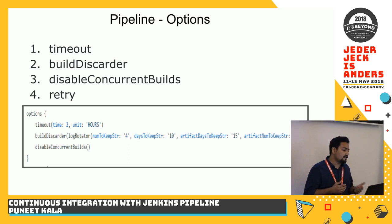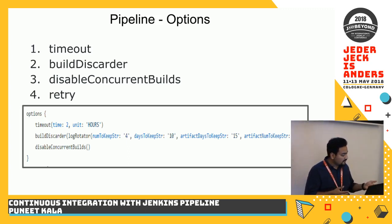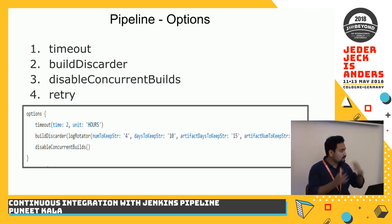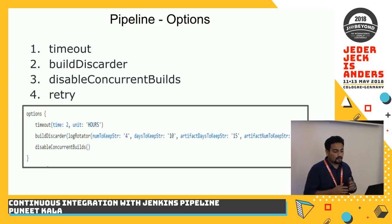Disable concurrent builds is a way of telling Jenkins that if there are two builds running for the same PR, disable the older one, run the most recent one, and once it's over, start the new incoming build for the same PR. This helps in optimizing your server performance and gives you better results with Jenkins.